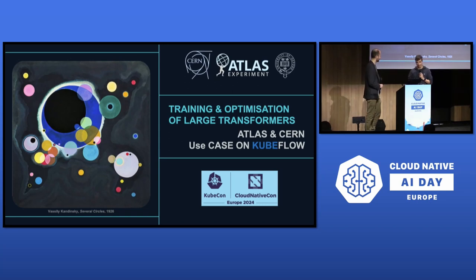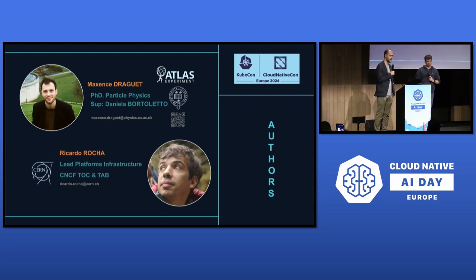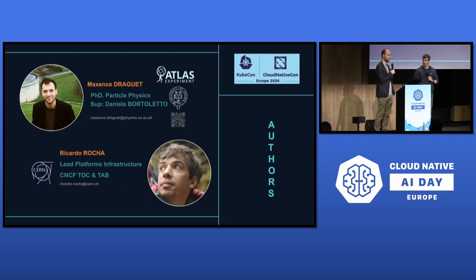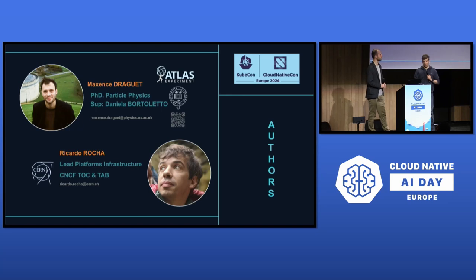So I don't have to pretend I know what I'm talking about today. My name is Maxence Trager and I am supposed to be the real physicist, but unfortunately my talk is mostly going to be about how to apply machine learning for a very specific use case in our experiment. And I'm Ricardo — I lead the platforms infrastructure team at CERN. I'm also a member of the technical oversight committee at the CNCF and the recently formed end user technical advisory board as well.